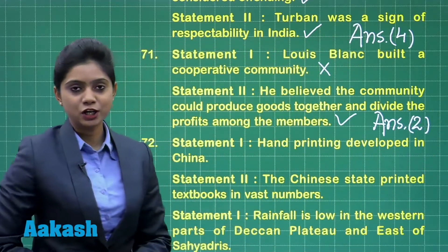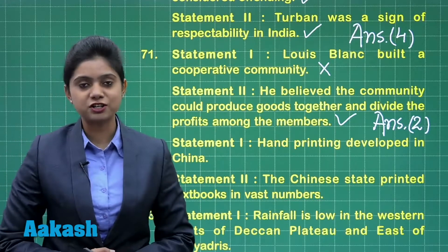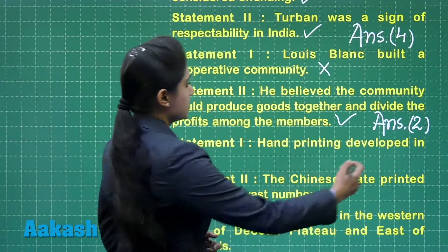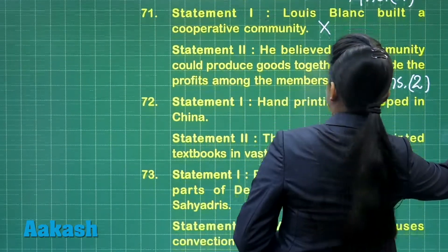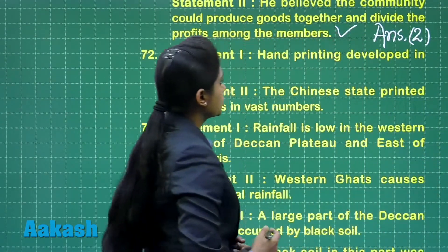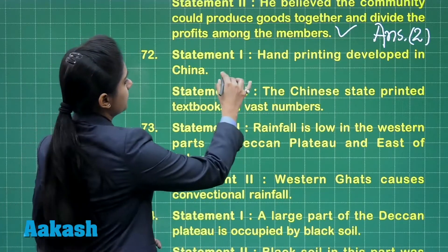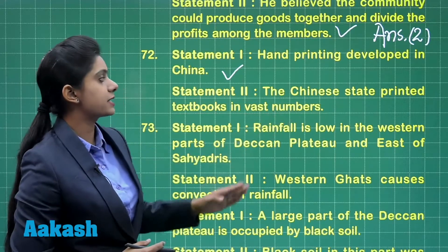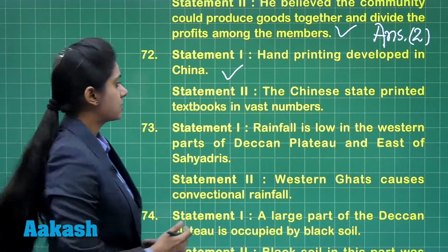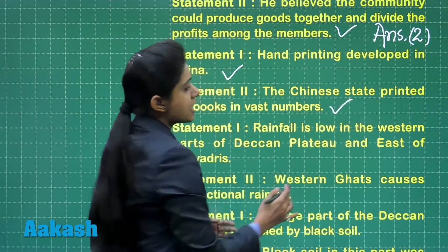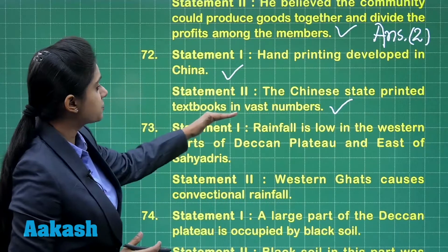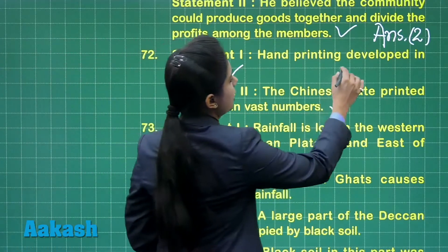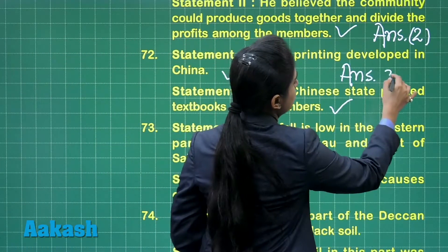Question 72: The first statement says hand printing developed in China — this is a correct statement. The second statement says the Chinese state printed textbooks in vast numbers — this is also a correct statement, and the second statement provides an explanation for statement one. So our answer here is option number three.